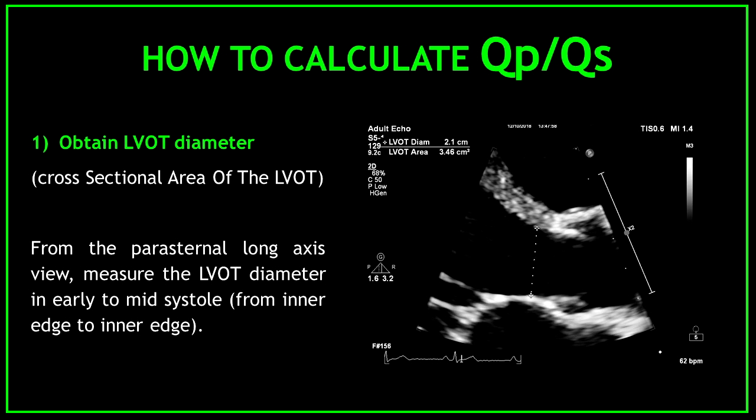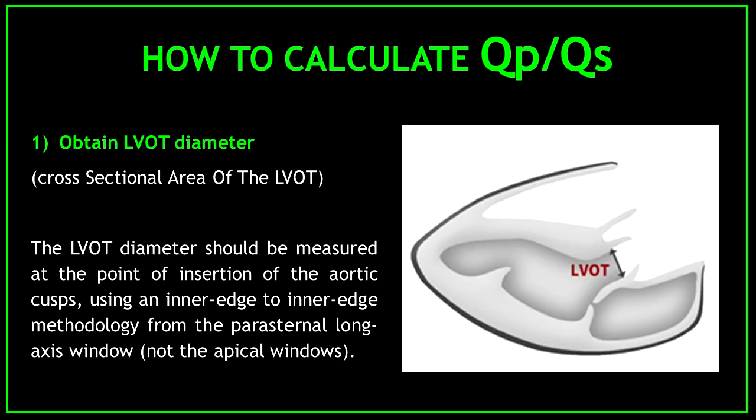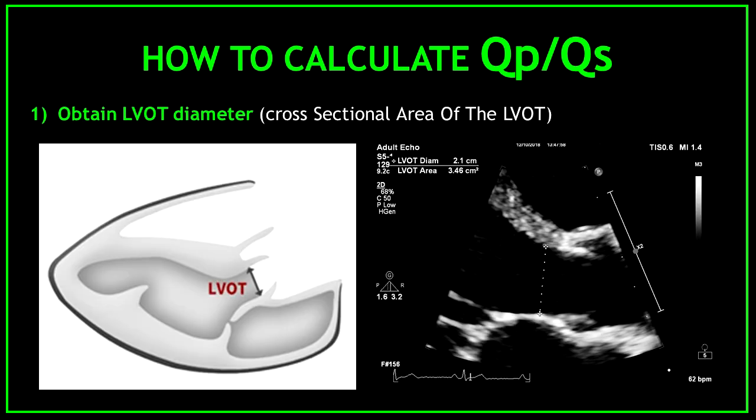Number one: obtain the LVOT diameter. You need this measurement to obtain the cross-sectional area of the LVOT. From the parasternal long axis view, measure the LVOT diameter in early to mid-systole, from inner edge to inner edge. The LVOT diameter should be measured at the point of insertion of the aortic cusps, using an inner edge to inner edge methodology from the parasternal long axis window, not the apical windows. If you want more information about how to measure the LVOT diameter properly, I have a full video on my YouTube channel, so I will leave the link in the description section.